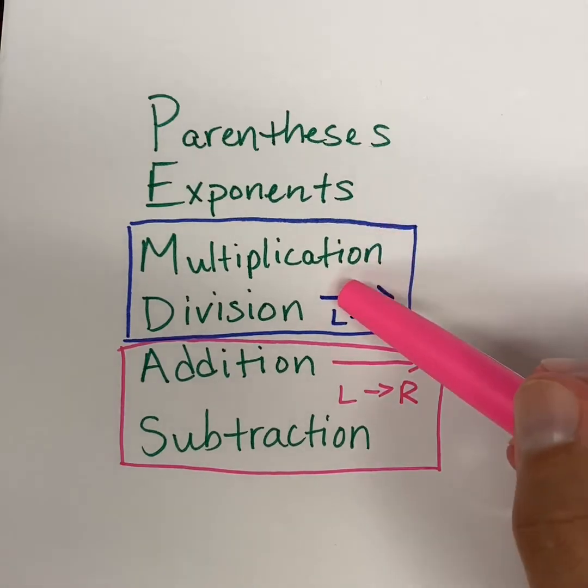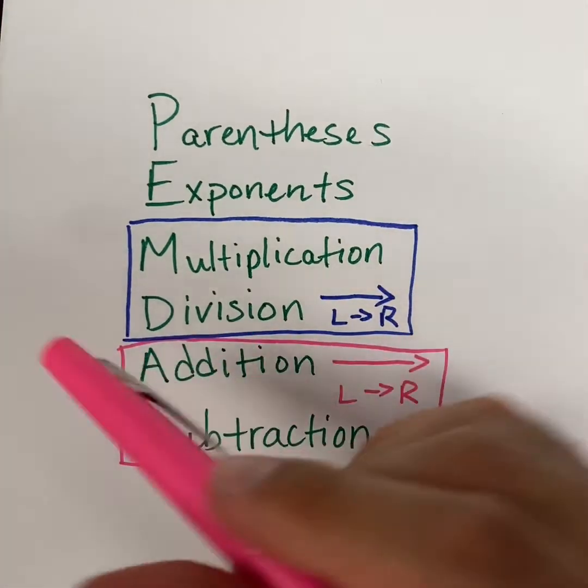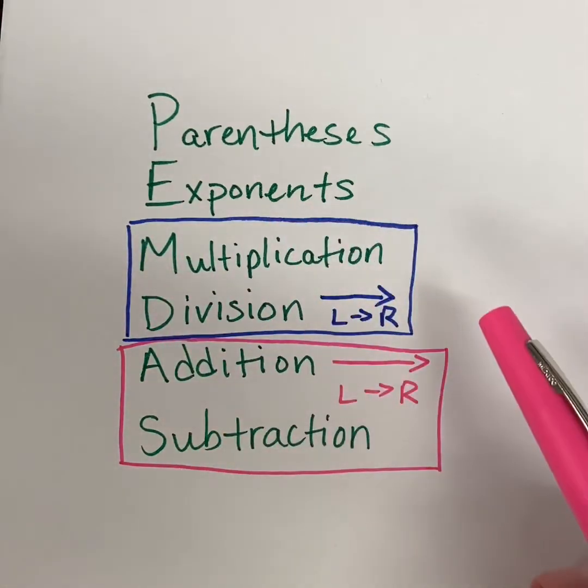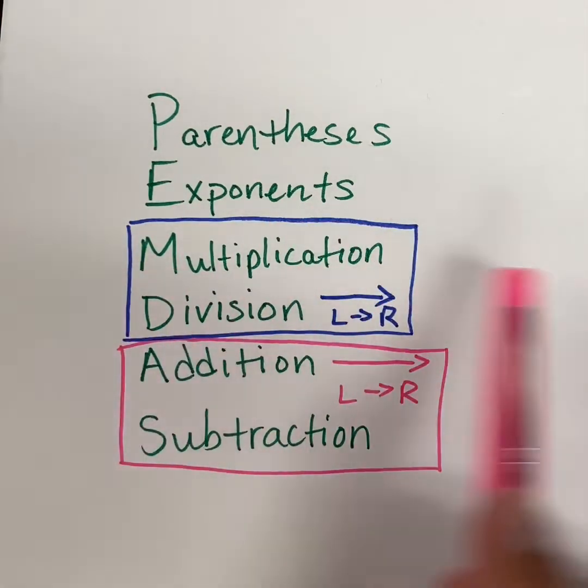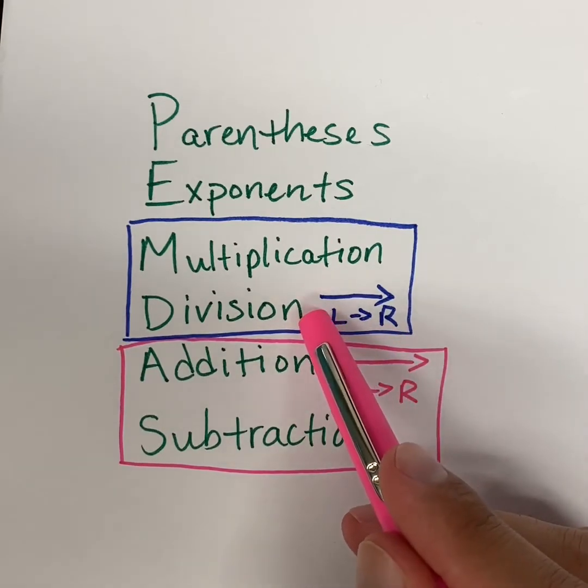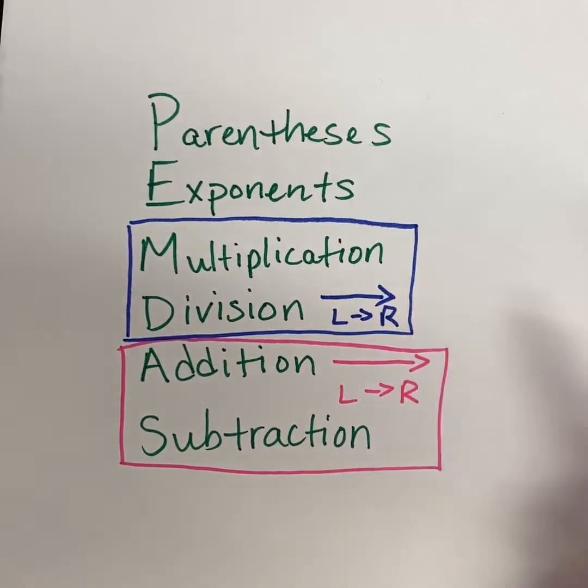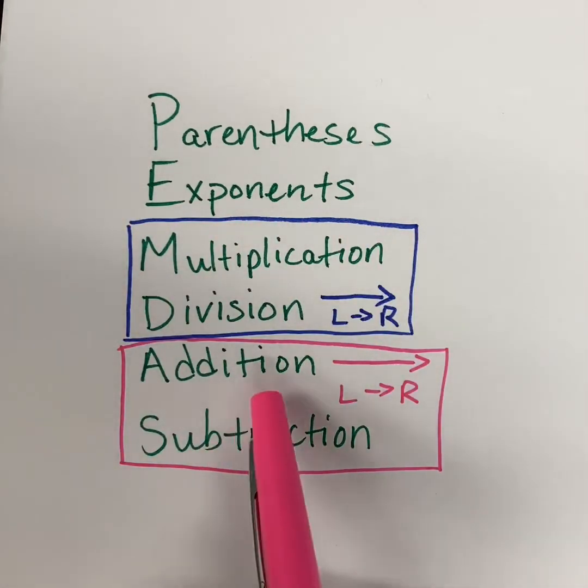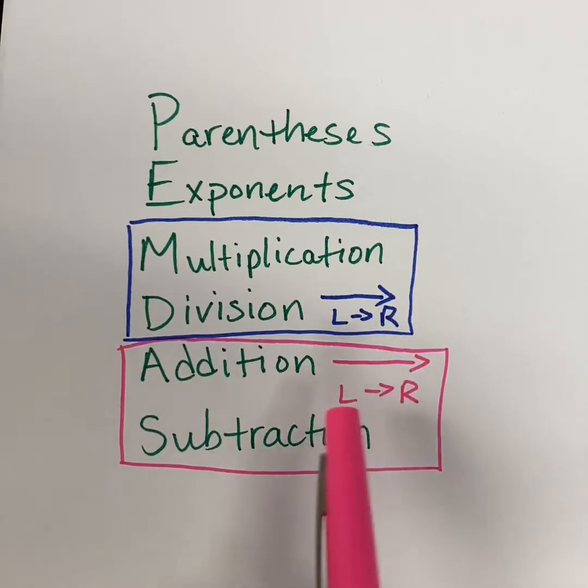Multiplication and division come next. The reason that they are in a box is because we are going to work through multiplication and division from left to right. And that's why this L and R are here with this arrow pointing from the left to the right. So you're going to do those in order that they come, left to right. Same thing goes for addition and subtraction. You would move from left to right. You would do any addition or any subtraction in that order in which they come. So let's go ahead and go back to that problem that we looked at at the beginning of this video.